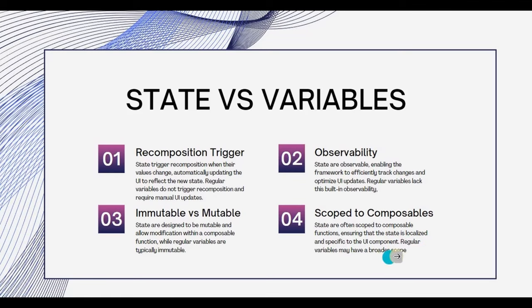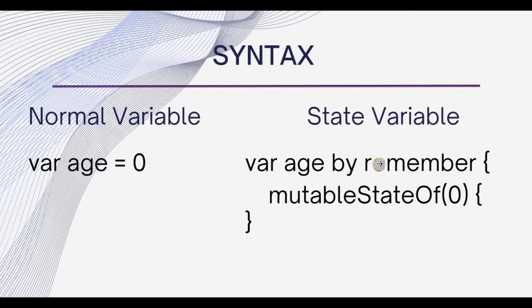Simple. Now let's move on to the important part, that is syntax. See, this is how we normally declare a variable, right? var age equals zero. But this is how we declare a state variable: var age by remember, inside it mutableStateOf zero. Now I know you might have a lot of questions. What is by? What is remember? And what is mutableStateOf? We will cover it, but before that I also want to clear this.